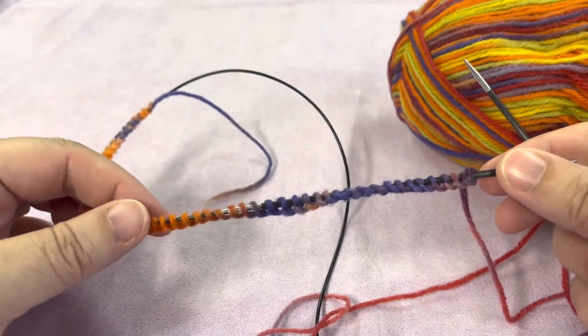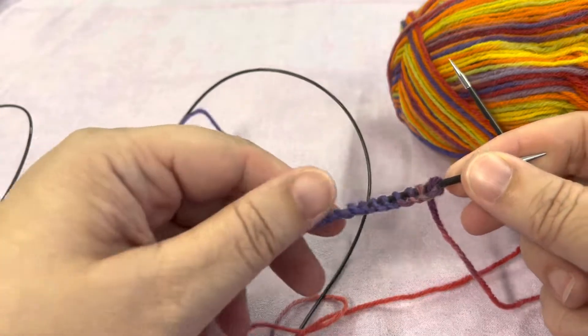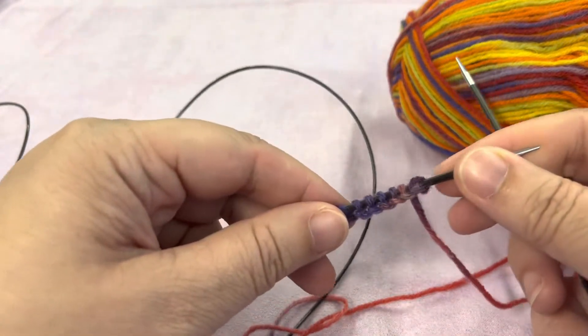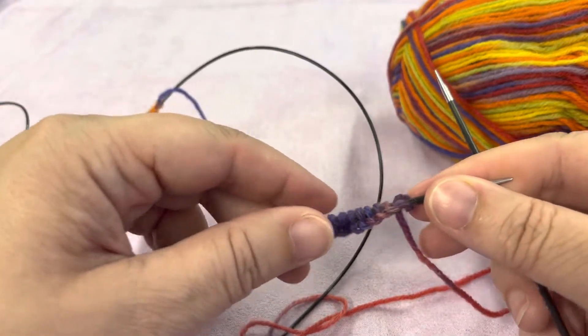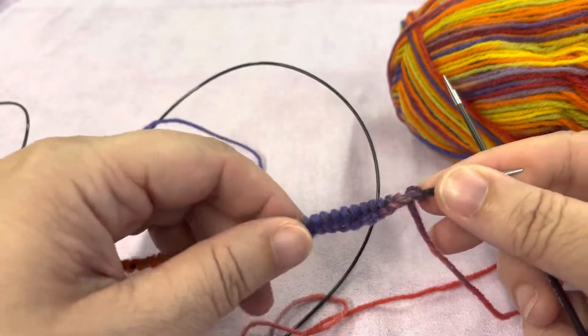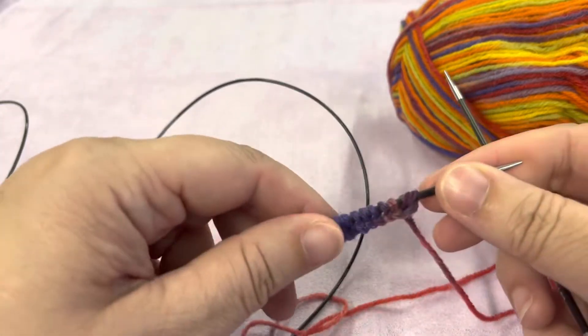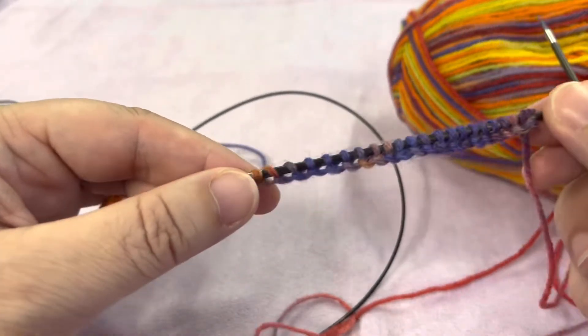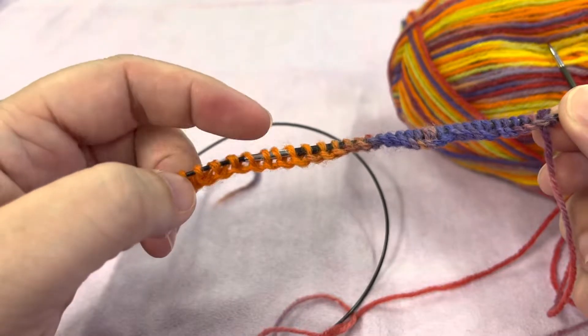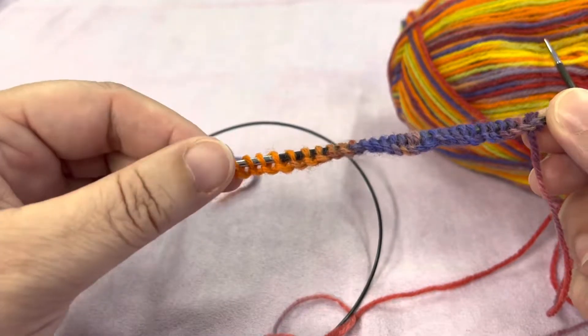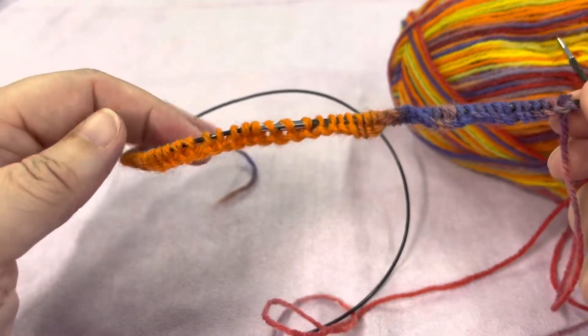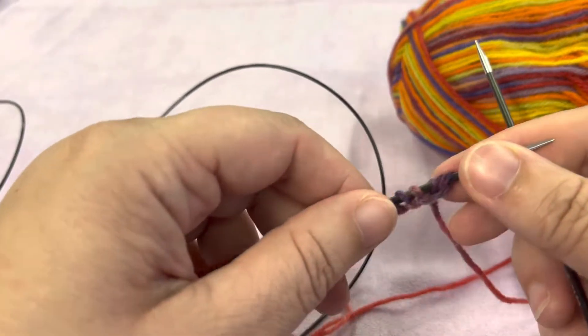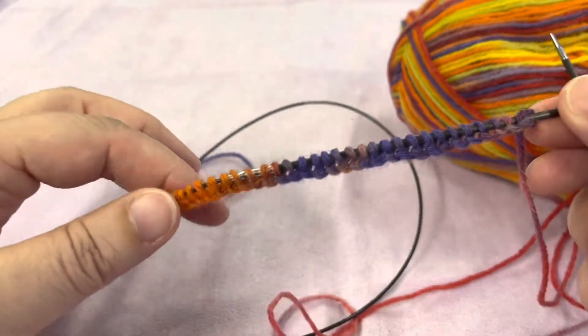Once you have your 60 stitches on your needle, you want to make sure you can slide them. See how I can slide that pretty easily back and forth? If it's really tight you're just going to be fighting with your knitting. They don't need to be loose and floppy, but they should slide nice and easily, especially over where the cord joins to your needle. That's the ideal for doing this.